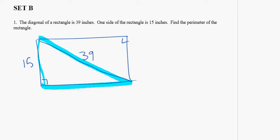We want to find the perimeter of the rectangle. We know opposite sides of a rectangle are congruent, so really what we're looking for is this side.